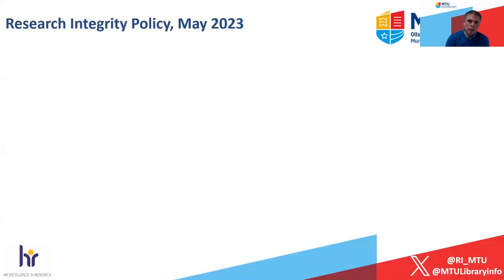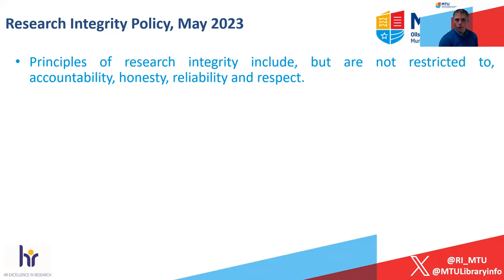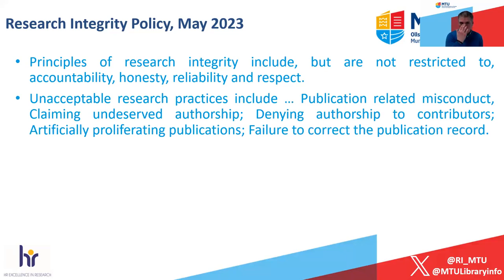Why are we doing this and how does it fit into research integrity? Our research integrity policy, approved by the Research Council and the Academic Council in May 2023, has four main principles: accountability, honesty, reliability, and respect. When you think about disseminating your work and authorship attributions, it's important to be accountable for all work you author, to be honest, and to ensure the research record is reliable, with respect for all contributors.